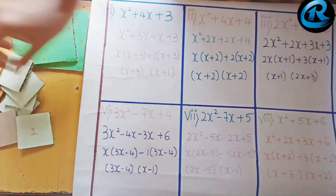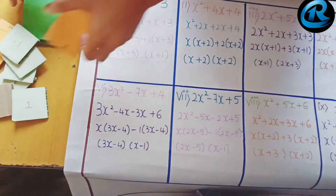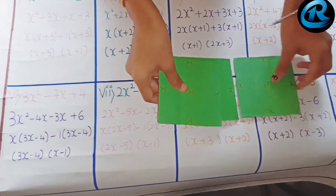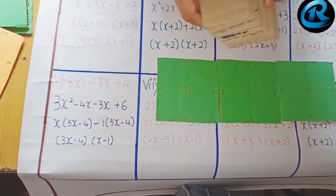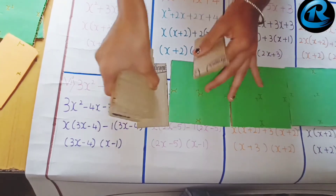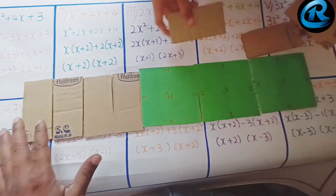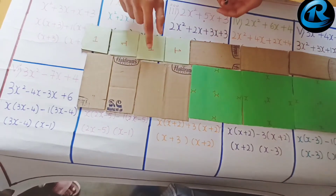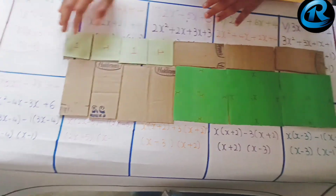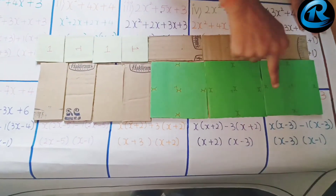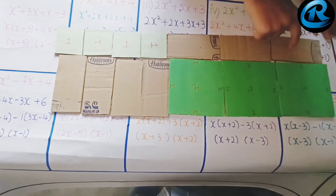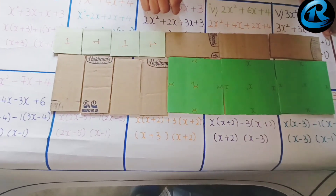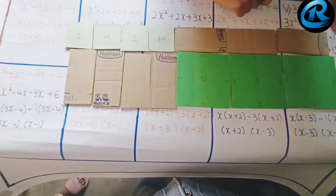Here the value is negative, so we have to place the cards in a reversed manner. For 3x² − 7x, the minus terms are placed in a reversed order, and for +4, since it is positive, we place them in a plain manner. We can see here (3x − 4)(x − 1), so 3x − 4 = 0 gives x = 4/3, and x − 1 = 0 gives x = 1.